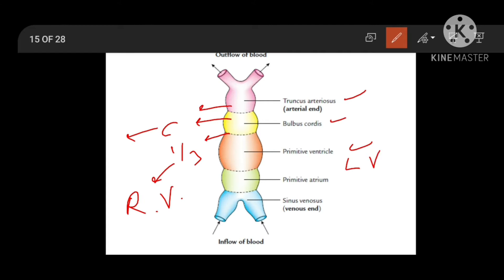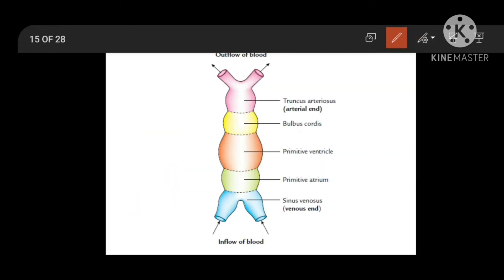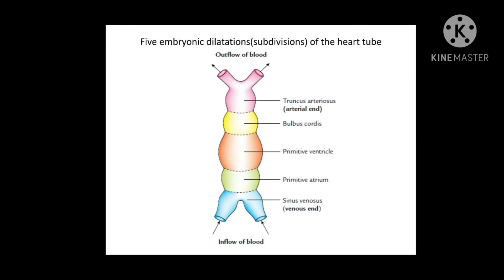So bulbous cordis and primitive ventricle together help in formation of the ventricles. Together they form a bulboventricular cavity or common ventricular chamber from which the ventricles will develop.